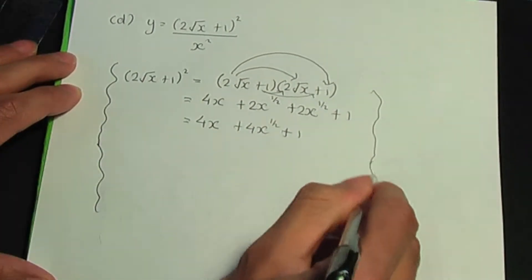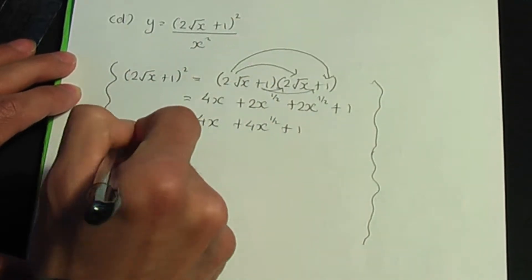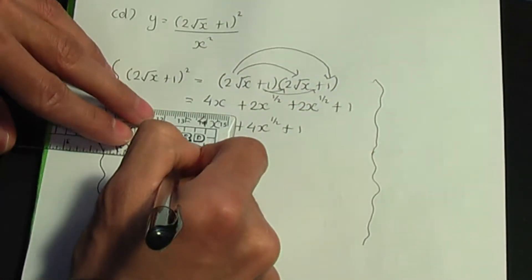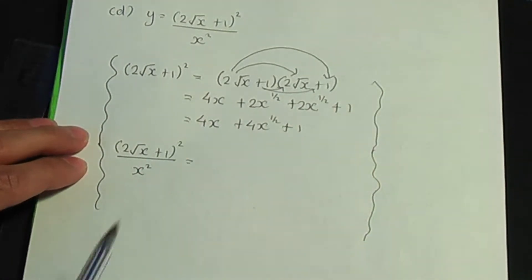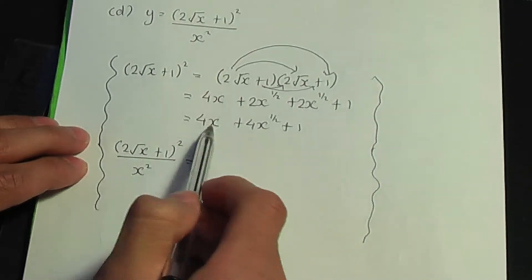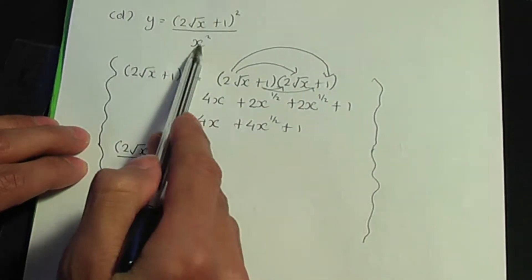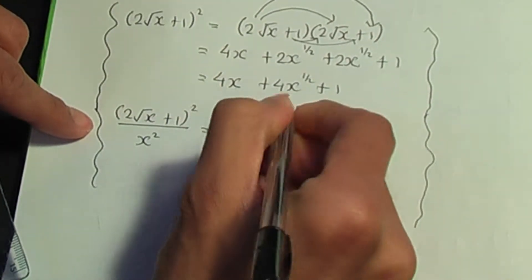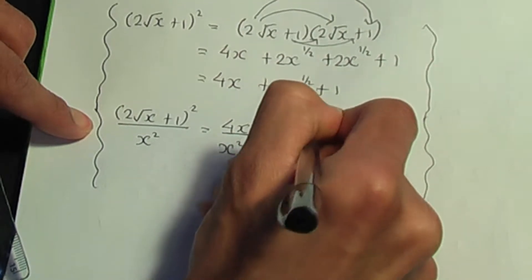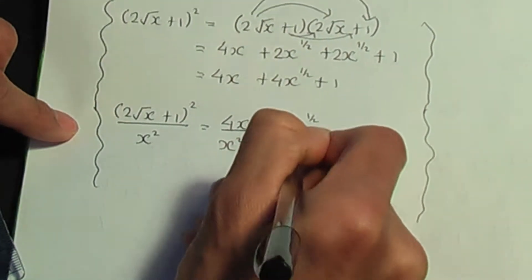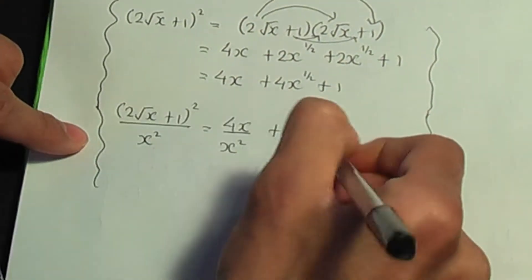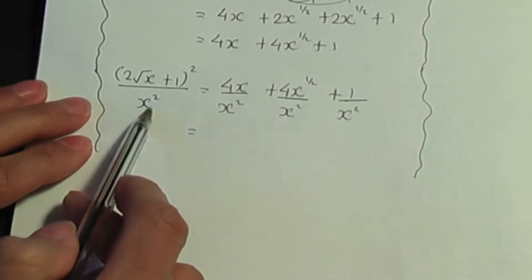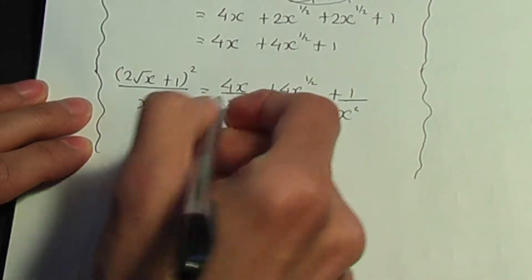So this is what you should have when you expand the numerator. Now we have the fraction (2√x + 1)² divided by x². To handle the fraction, divide each term in the numerator by the denominator. So divide 4x by x², divide 4x to the half by x², and also divide the 1 by x². You need to simplify each term individually.